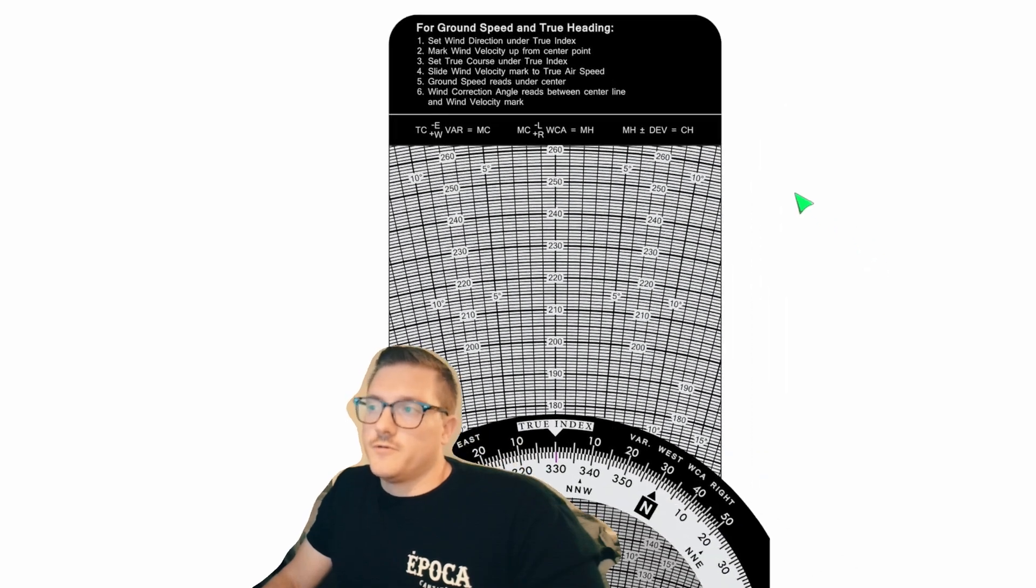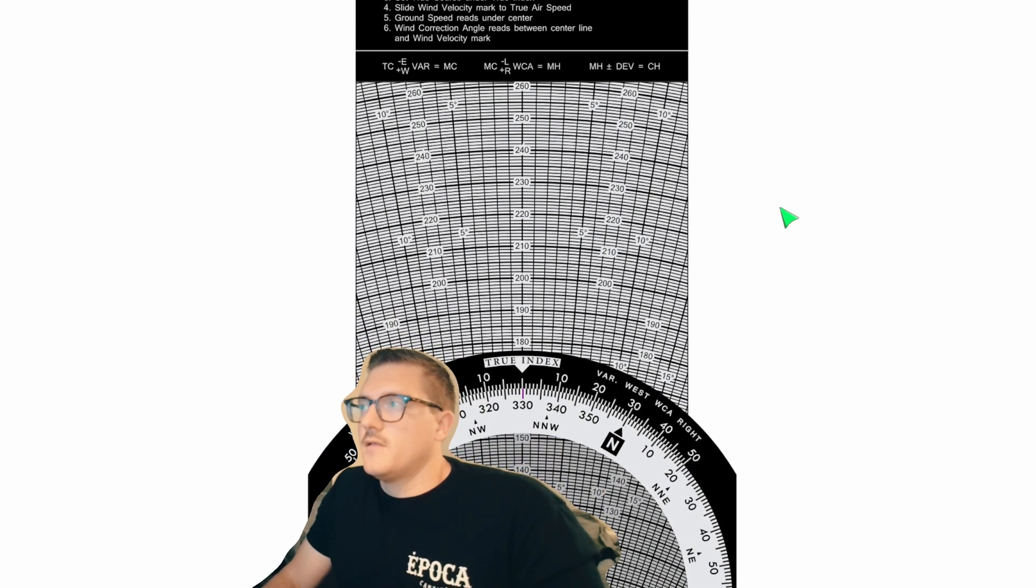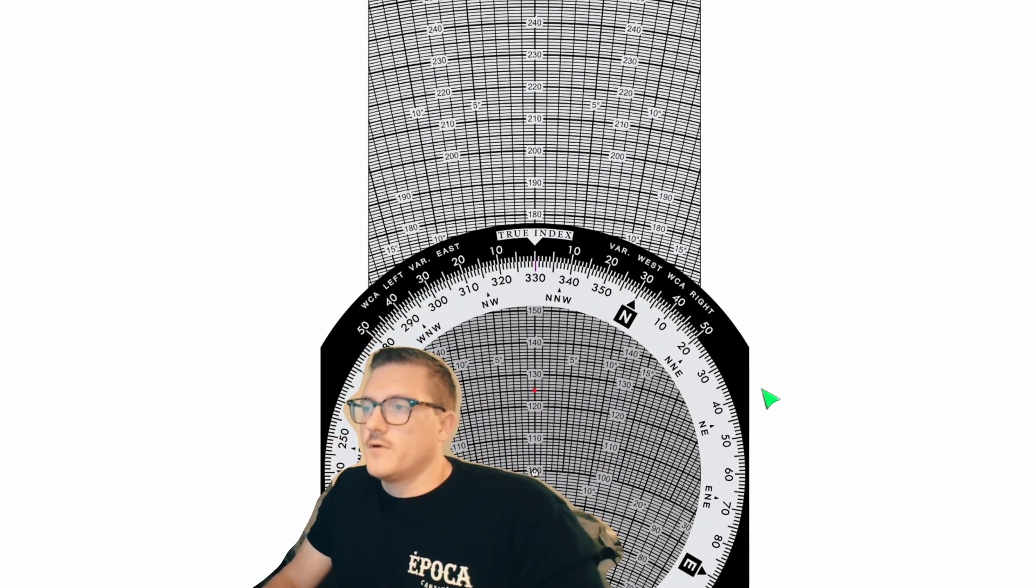Now the third thing we're going to do is set true course under true index. We got our true course. Our true course was going to be the 12 number. So now we'll move that over here. So 10, 11, 12. We can see our point moved, but now we can read off what our wind correction angle is going to be.